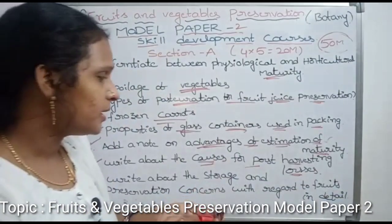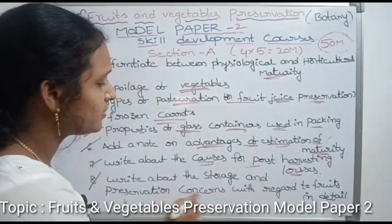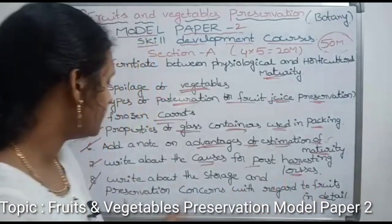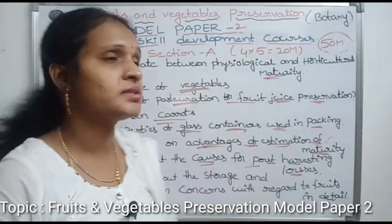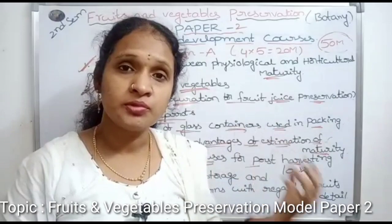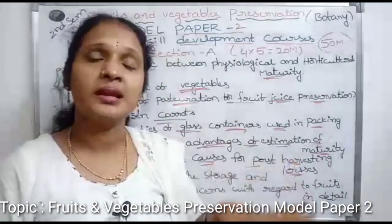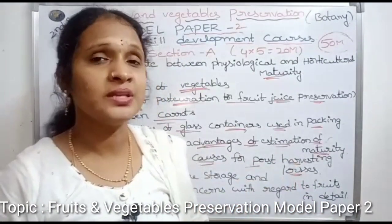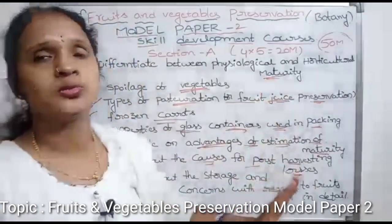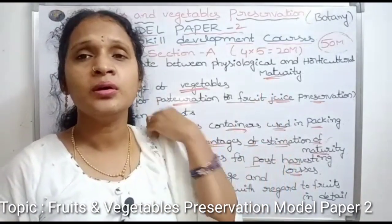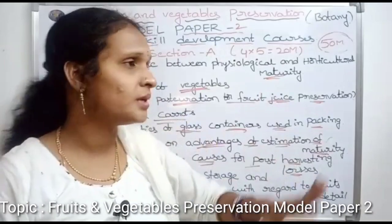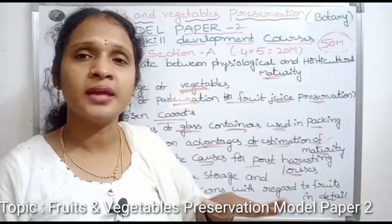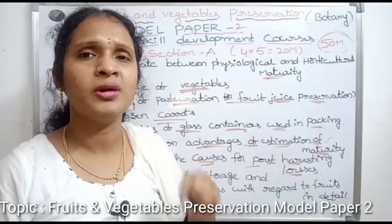Eighth question: write about the storage and preservation of fruits in detail. For 5-mark questions, you need to give a minimum of 9 to 10 points in your answer. You don't need to write 10 points for every question, but you should aim for at least 9 to 10 points and can use a diagram as well.